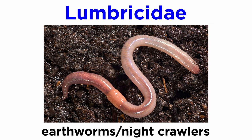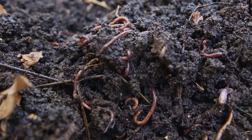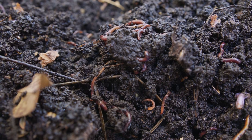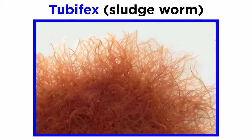Lumbricidae contains the vast majority of animals commonly referred to as earthworms or nightcrawlers. There are at least 6,000 valid species, of which more than 30 are now found around the world, mostly due to human agricultural practices that brought earthworms to areas where they are not native. The other two families include freshwater species such as the microscopic Aeolosoma, Stylaria, and dero worms, as well as the common tubifex, or sludge worm, notorious for their durability and resistance to oxygen-poor environments.